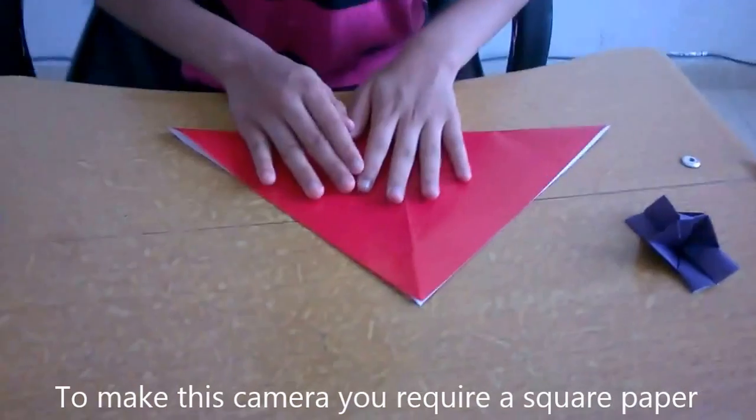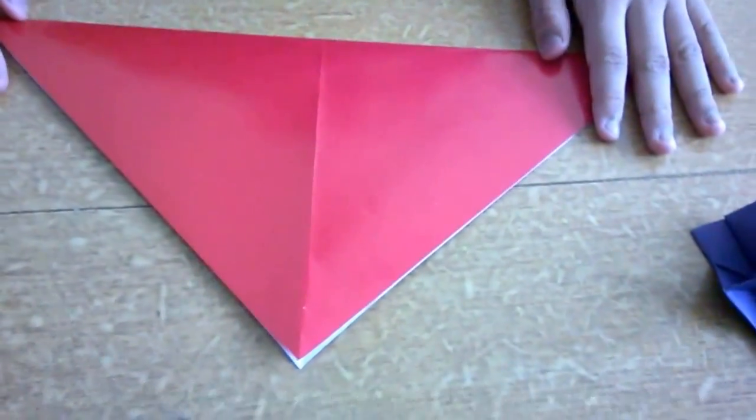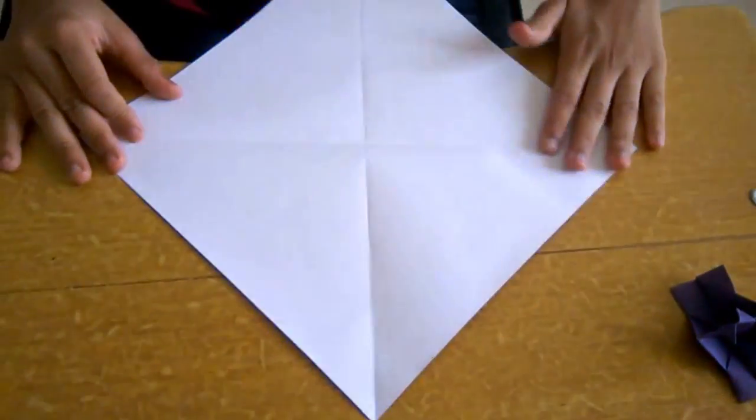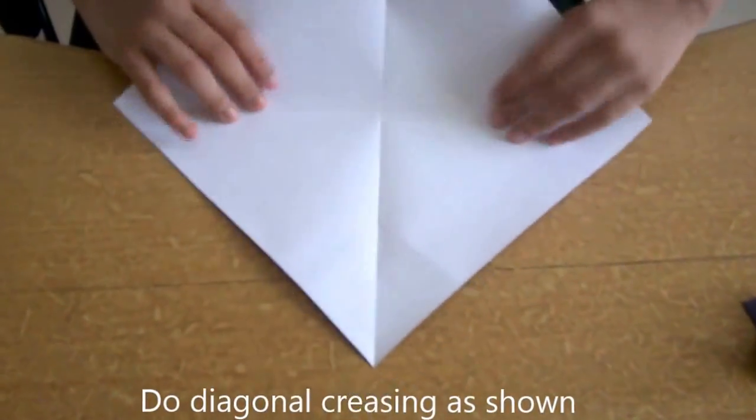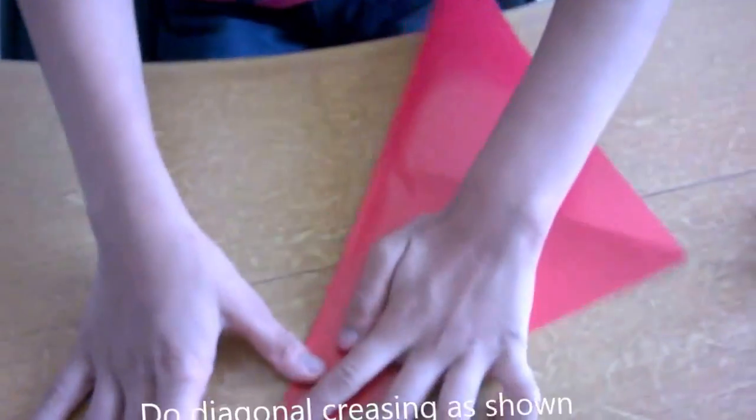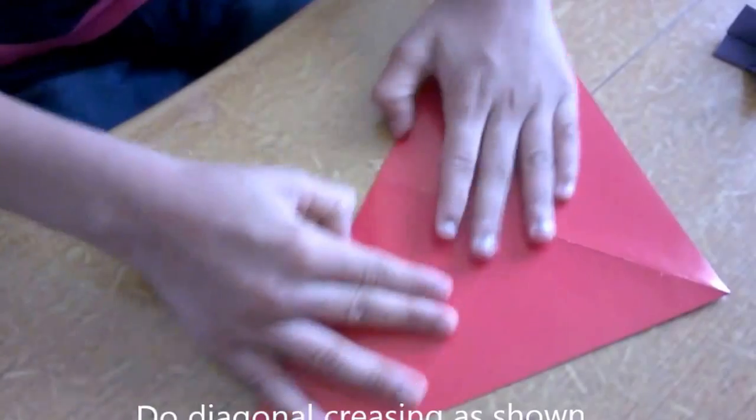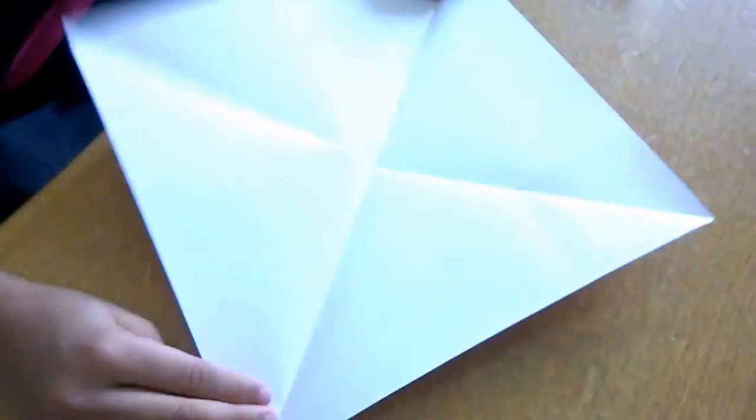Take the square and fold it in half. Open it, then rotate it and fold it again in half. Crease well. Open it.